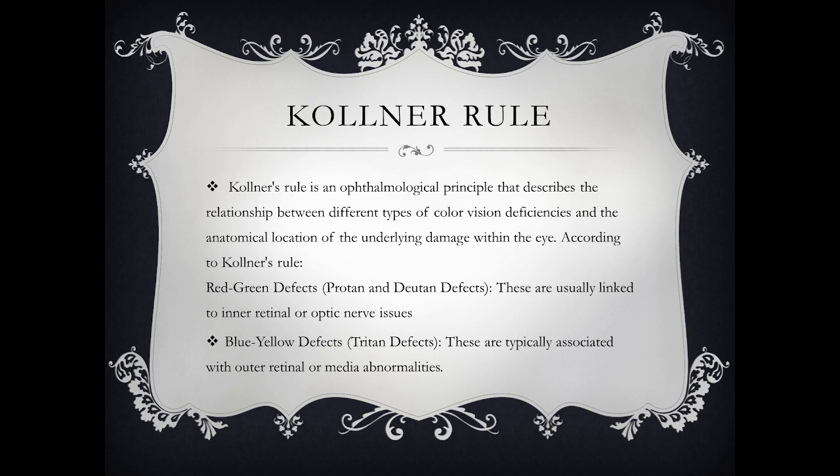According to Kollner's Rules, the red-green defect — also known as the protan and deutan defect — is usually linked to inner retinal or optic nerve issues. The blue-yellow defect, or tritan defect, is typically associated with outer retinal or media abnormalities.